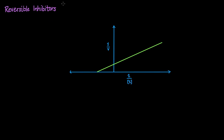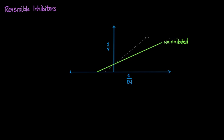We're going to be reviewing reversible inhibitors. Here I have a Lineweaver-Burk plot, also called a double reciprocal plot, of a typical enzymatic reaction. This line represents a particular reaction that is uninhibited. Now let's say we add an inhibitor and it changes the plot to look like this instead.